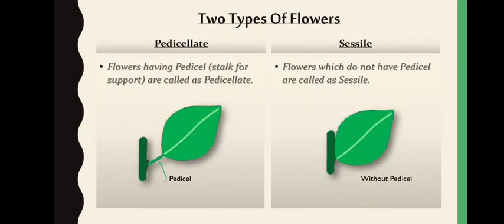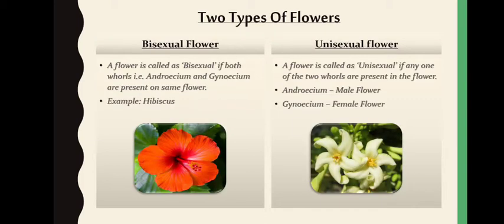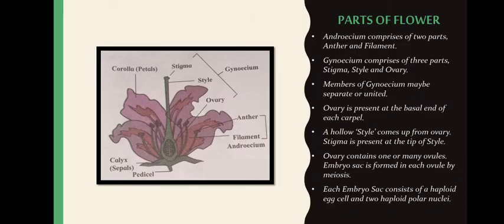Another classification of flowers is pedicellate and sessile. A pedicel is a stalk which supports the flower. If that stalk is present, the flower is called a pedicellate flower. If the pedicel is not present, the flower is called a sessile flower. As shown in the diagram, the flower illustrated is a pedicellate flower because it has a pedicel.